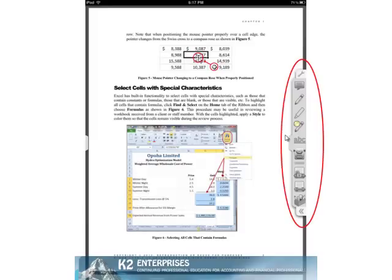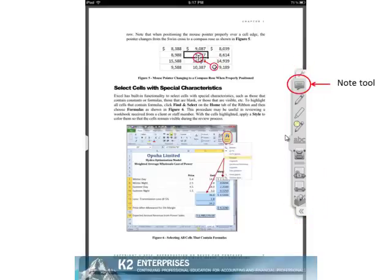Like the Goodreader app discussed previously, iAnnotate PDF docks a toolbar to the right side of a PDF document. At the top of the toolbar, users will find a note tool, allowing them to create sticky notes and attach the sticky note to a document. A finger tool, which allows a user to use his or her finger to draw free form on the document.